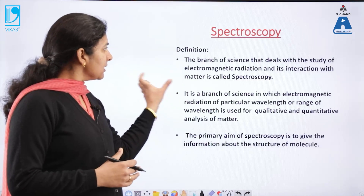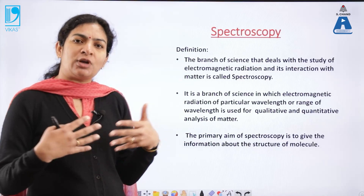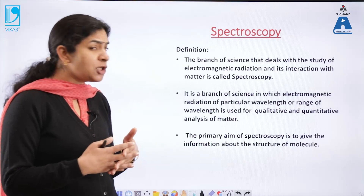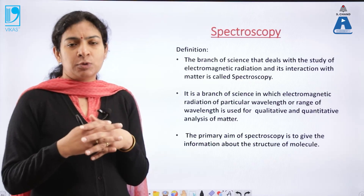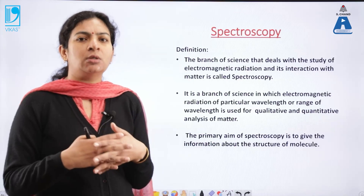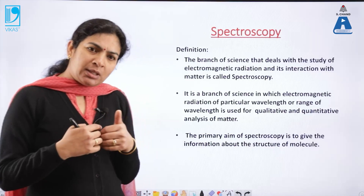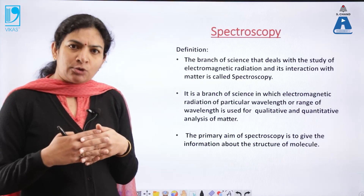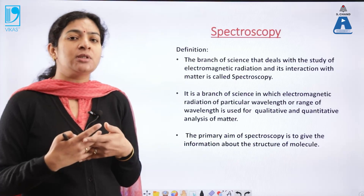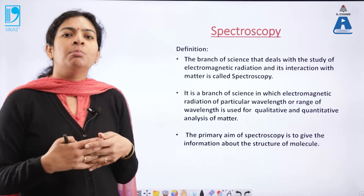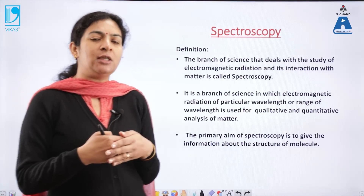To be very precise, spectroscopy is basically a branch of science which deals with the interaction of matter with electromagnetic radiation, and the whole aim of spectroscopy revolves around determining the structure of atoms and molecules. Though the primary aim of spectroscopy with which it started is the structural elucidation of atoms and molecules, it has now extended its application into almost every field of science.